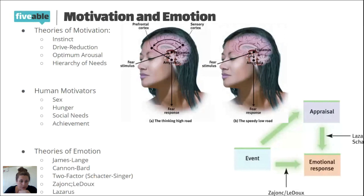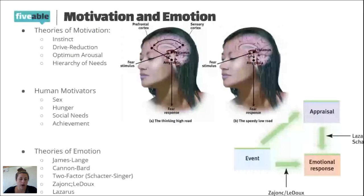The theories of emotion are probably one of the more tricky components on the AP test because they're very similar. Differentiating between which theory is being presented can be difficult. The three main theories are James-Lange, Cannon-Bard, and two-factor (Schachter-Singer). There are also more modern views: Zajonc and Lazarus.